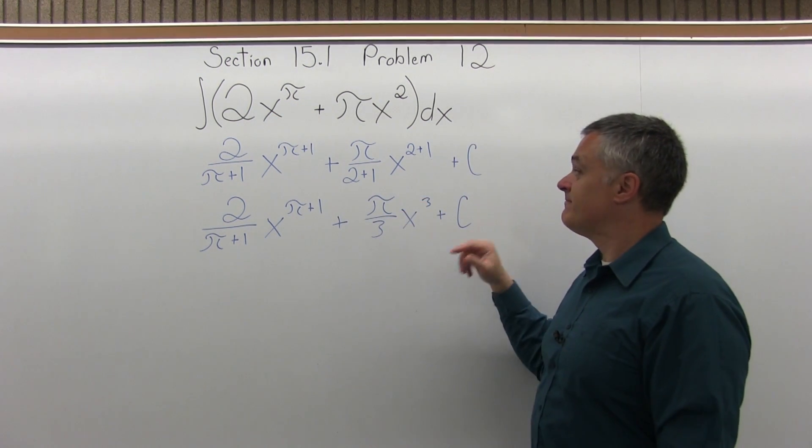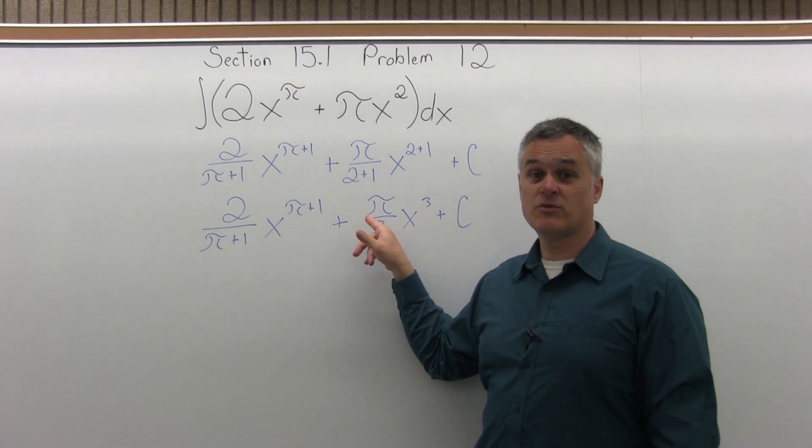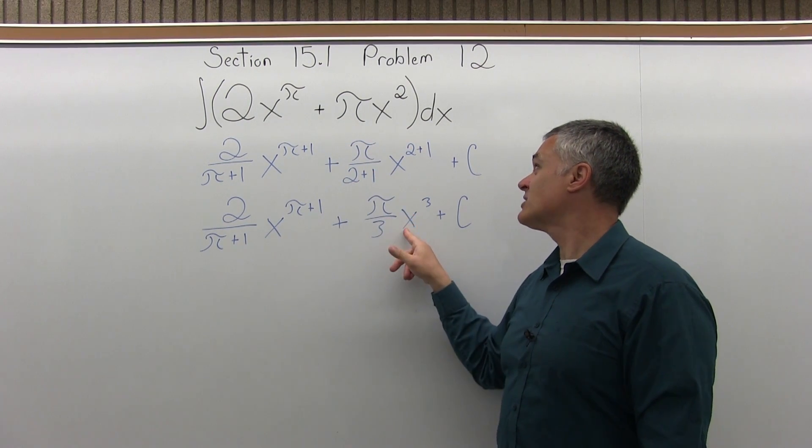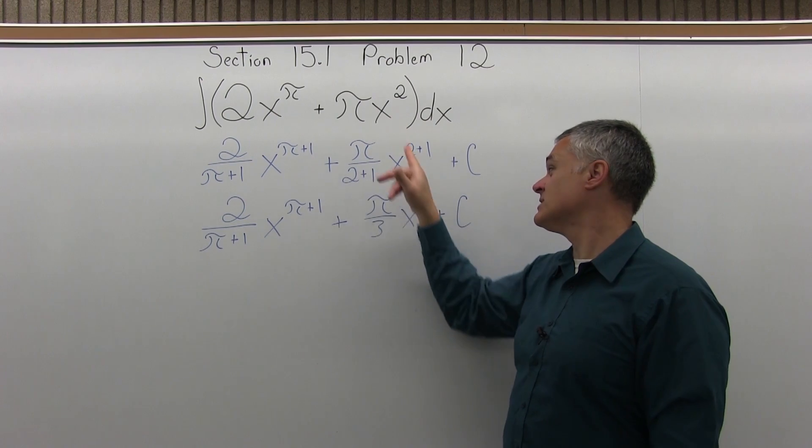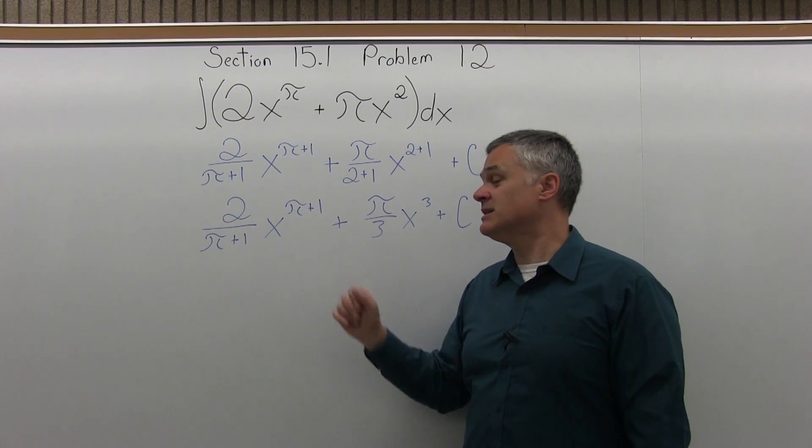And then the next piece, pi over 3x to the third, well, the exponent of 3 comes down times the number in front, pi over 3, the 3s cancel, giving you just a pi. x to 1 less power, the third power drops to a second power, so that fits 2. And the constant would just go to 0. So it is the answer.